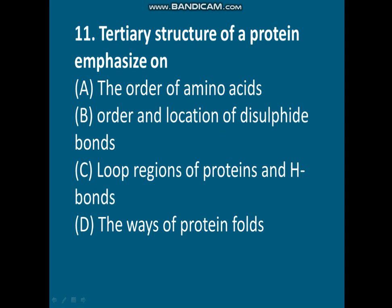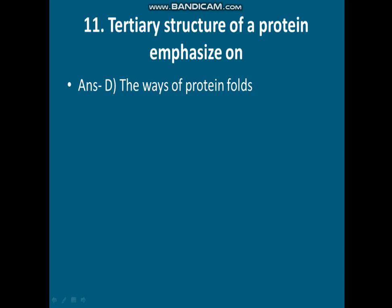Question eleven: the tertiary structure of a protein emphasizes on what? As discussed earlier, proteins have primary, secondary, tertiary, and quaternary structures. Options are: A) The order of amino acids, B) The order and location of disulfide bonds, C) Loop regions and hydrogen bonds, D) The way the protein folds. The correct answer is option D - tertiary structure emphasizes the way the protein folds.